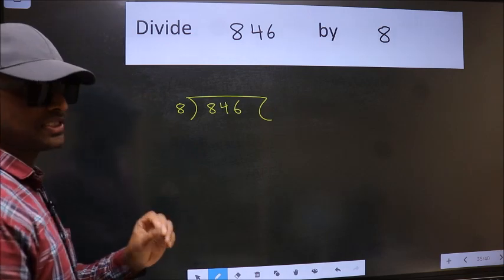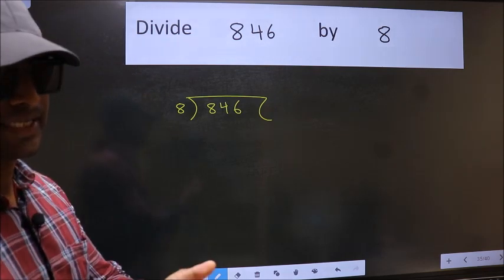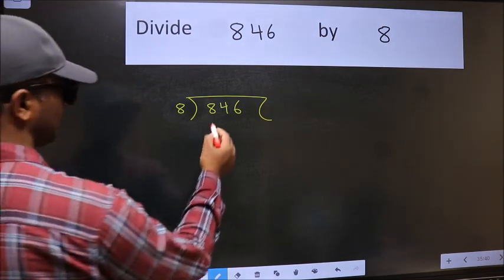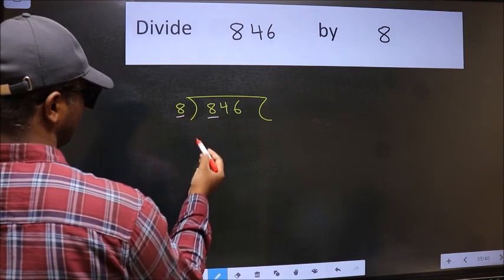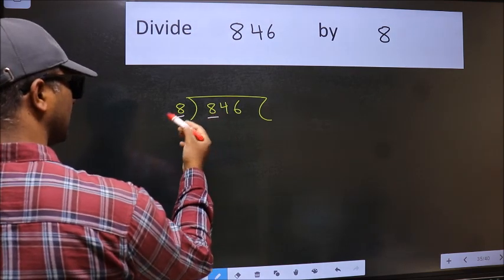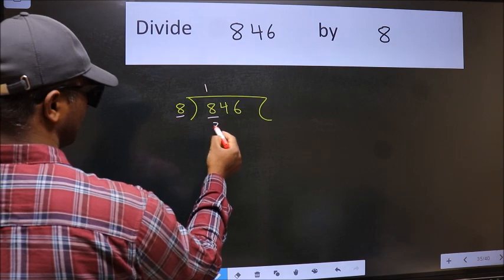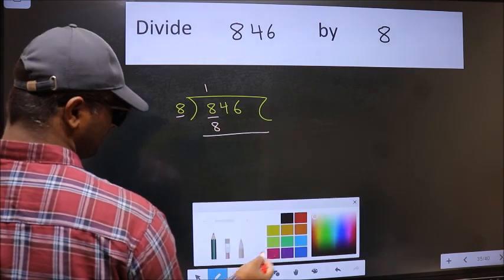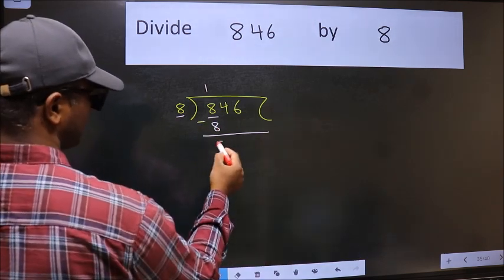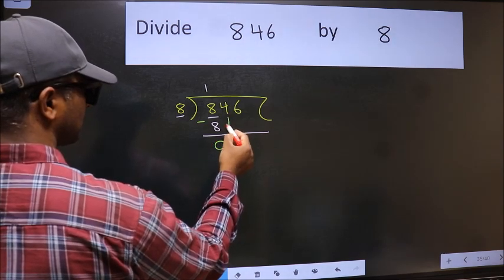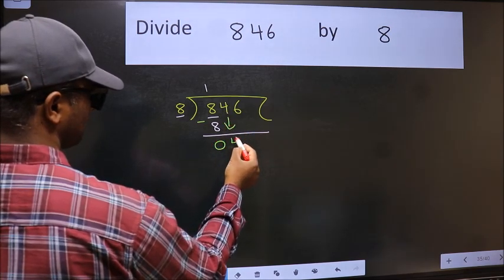This is your step 1. Next, here we have 8 and here 8. When do we get 8 in 8 table? 8 once 8. Now we should subtract, we get 0. After this, bring down the beside number 4 down.